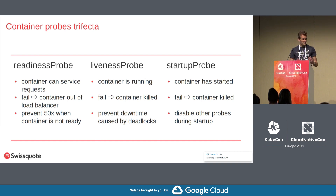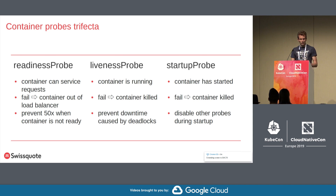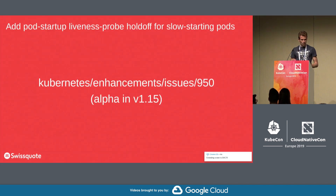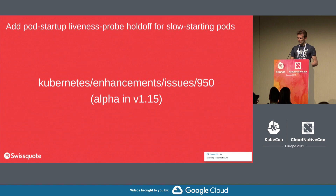By keeping the same API, you can define and check the end of a container startup phase. Until this probe succeeds, all the other probes are disabled. This is the subject of KEP 950, sponsored by SIG node, and it should be available in the next release of Kubernetes.